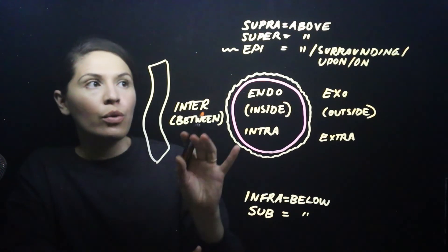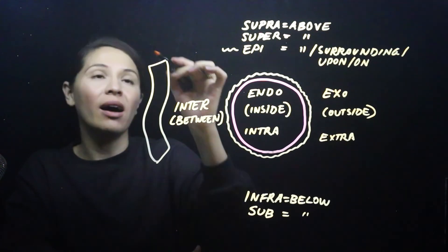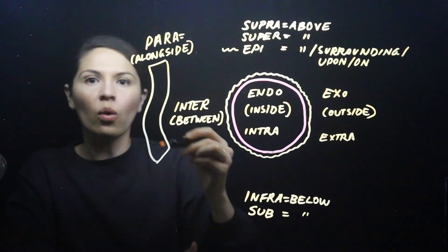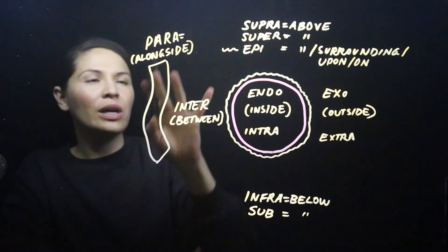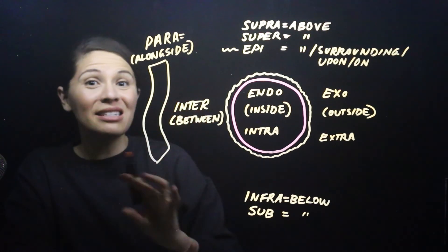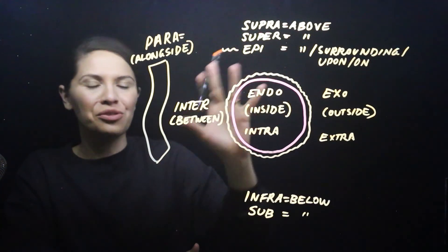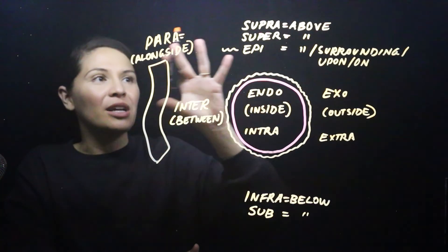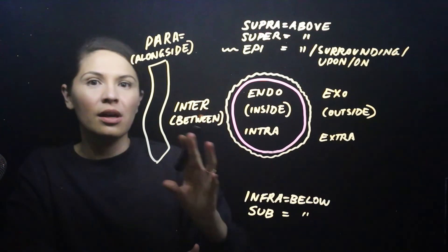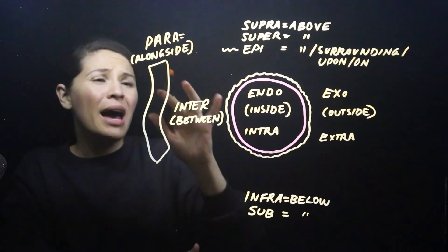Lastly, we have para, which means alongside, and it also generally means surrounding. You can see how some of these terms overlap, but if you understand these prefixes you should be well set for looking at the names of structures and processes.